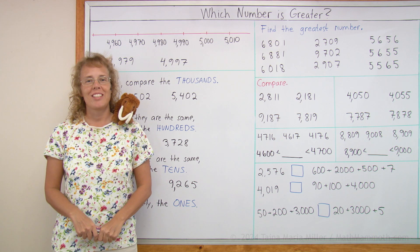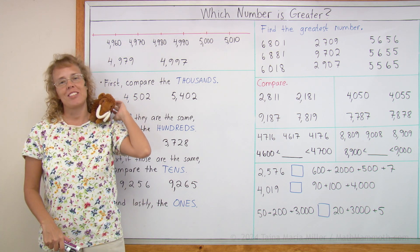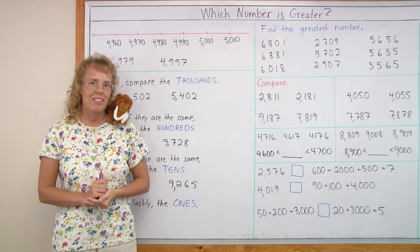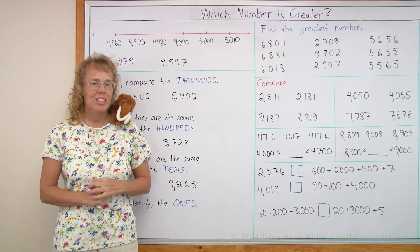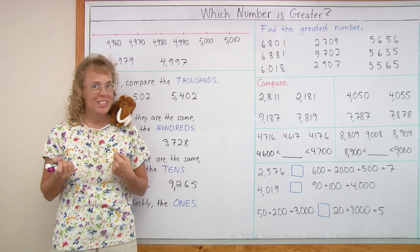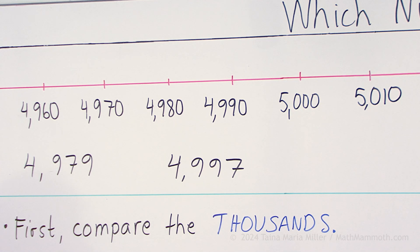Hello, my name is Maria and this is Matthew, my mascot. In this lesson we're going to be comparing four-digit numbers, figuring out which number is greater. Here I have a number line and then there's two numbers. Can you tell me which one of those is the greater number?